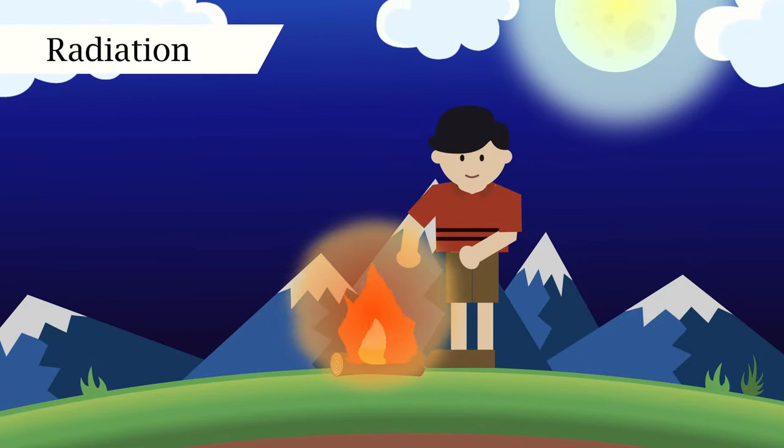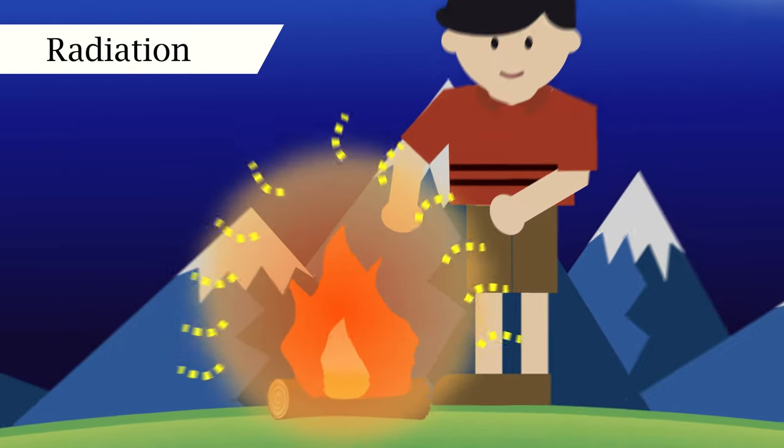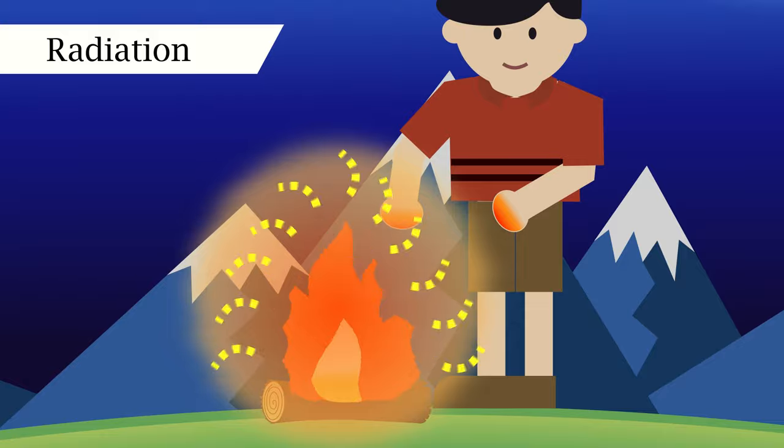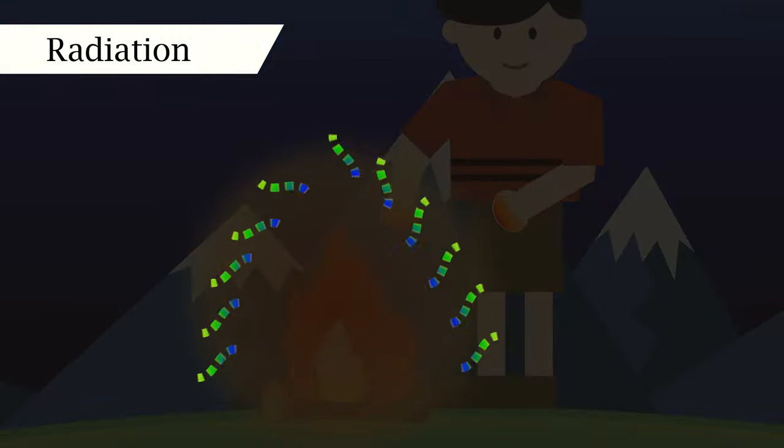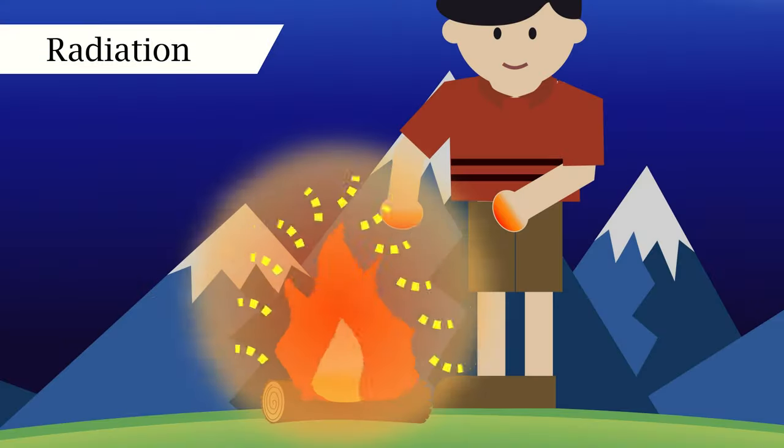Finally, let's talk about radiation. This is defined as electromagnetic waves traveling through space. When electromagnetic waves come in contact with an object, the waves transfer the heat to that object. It's heat traveling in the form of visible and non-visible light.